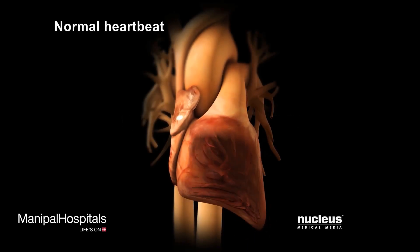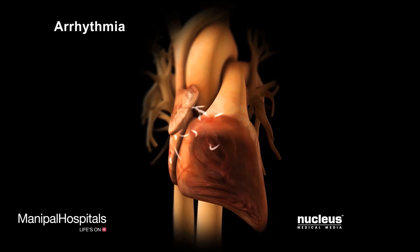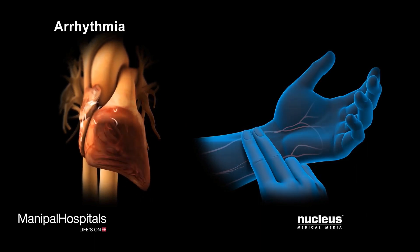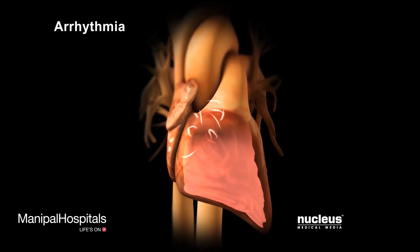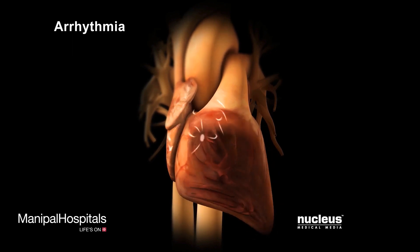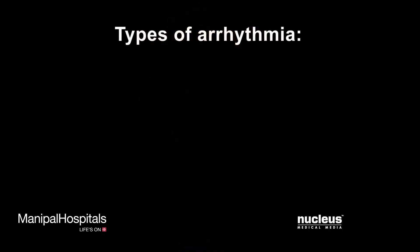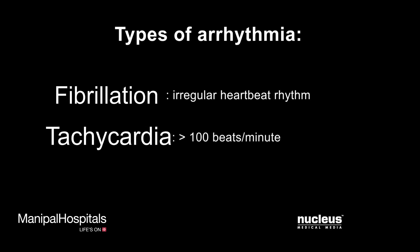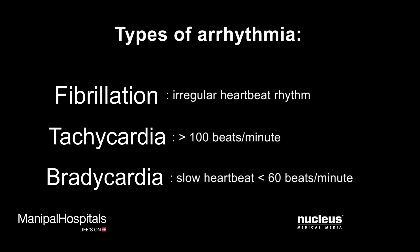Problems with the cardiac conduction system cause the heart to have an abnormal rhythm called an arrhythmia, which may cause an irregular pulse. Arrhythmias may happen in the atria or ventricles. Types of arrhythmias include fibrillation, which is an irregular heartbeat rhythm; tachycardia, which is a fast heartbeat of more than 100 beats per minute; and bradycardia, which is a slow heartbeat of less than 60 beats per minute.